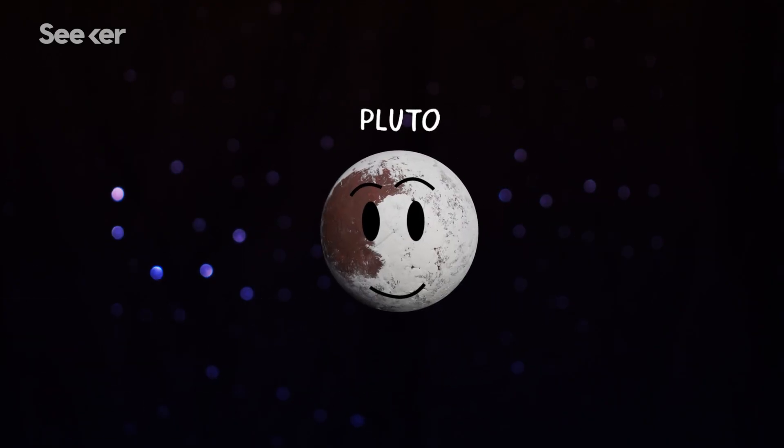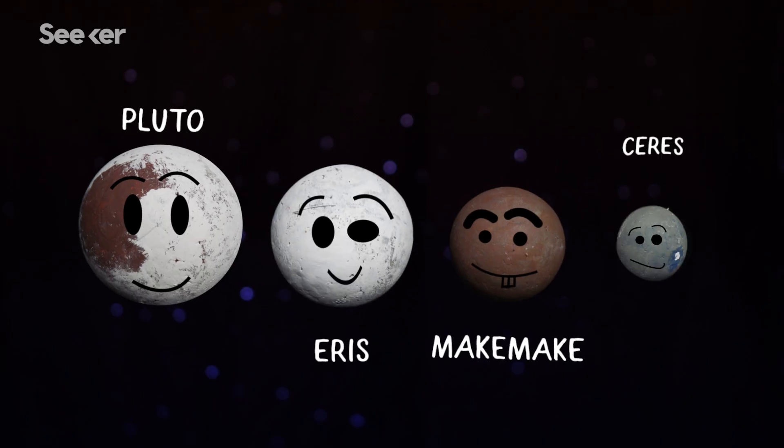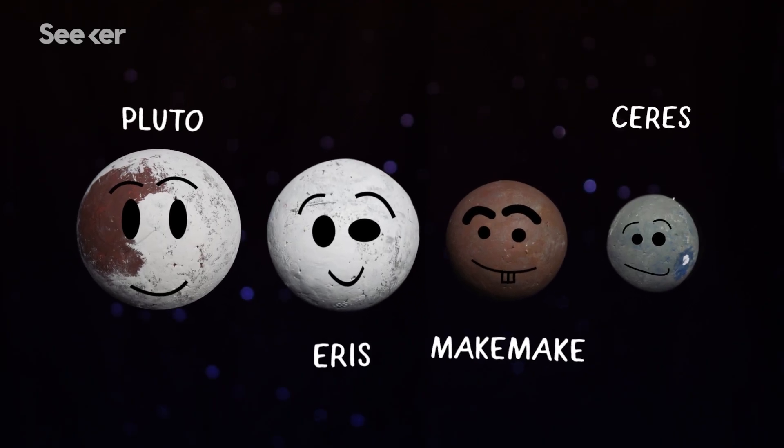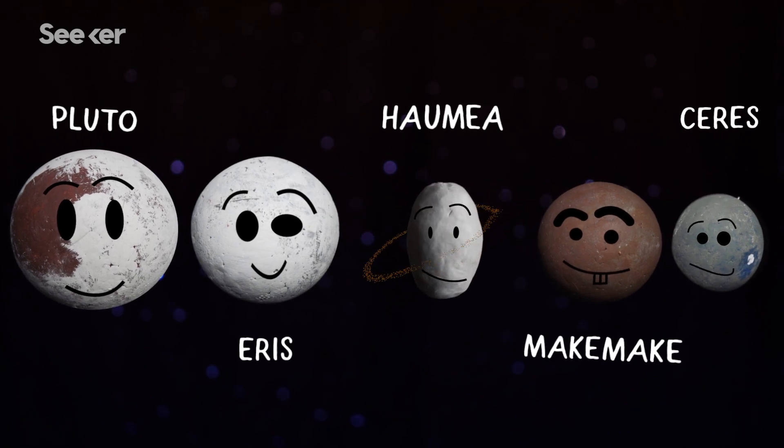But the good news is, he isn't alone. There are several other celestial bodies that are also members of the dwarf planet squad. This motley crew is full of shapes, sizes, and colors. One even looks like a potato with a hula hoop.